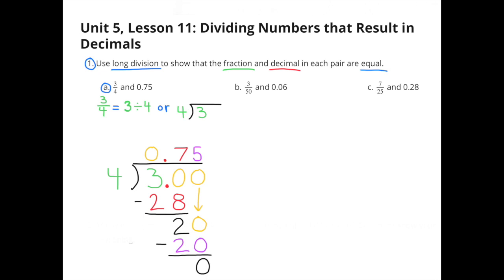A. 3 fourths and 75 hundredths. 3 fourths is the same as 3 divided by 4, so the question is: how many times does 4 go into 3? Since 4 is greater than 3, it's not going to go in all the way, and the answer is going to be a decimal.